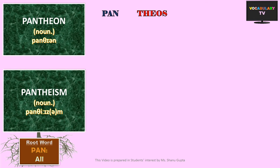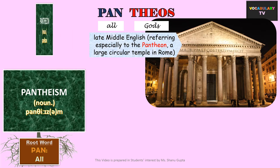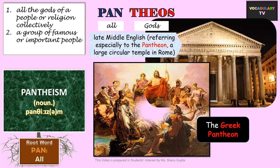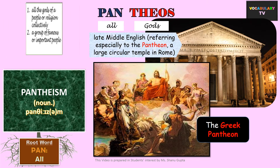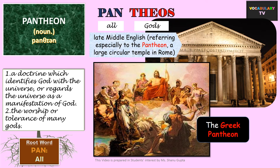The next word is Pantheon. Since the root Theus means God, the word literally means 'all Gods.' It popularly refers to a large circular temple in Rome dedicated to all Gods. Pantheon also means all the gods of a people or religion collectively, like the deities of the Hindu pantheon or the Greek pantheon. Instead of Gods, the word can also refer to a group of famous or important people. A related word is Pantheism, which stands for the theory that everything — the entire universe — is a manifestation of God, and can also denote the worship or tolerance of many Gods.